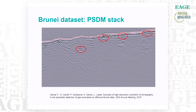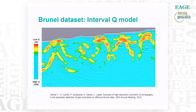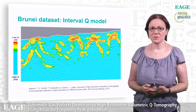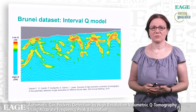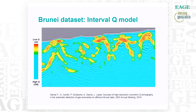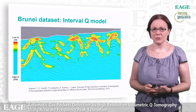Here is the PSDM data, with gas anomalies shown by the red circles. Here is the inverted Q volume computed by Q tomography automatically. The spatially varying 3D Q model follows the geological structures. Despite the complexity of the geology, the gas anomalies were all automatically detected by the volumetric Q tomography.